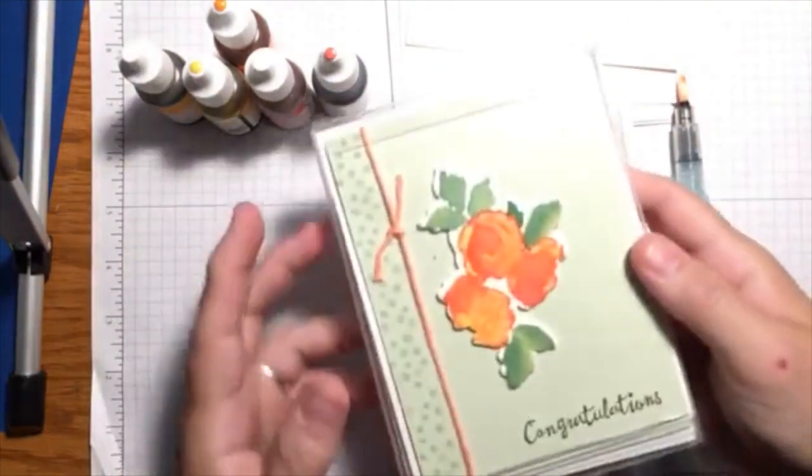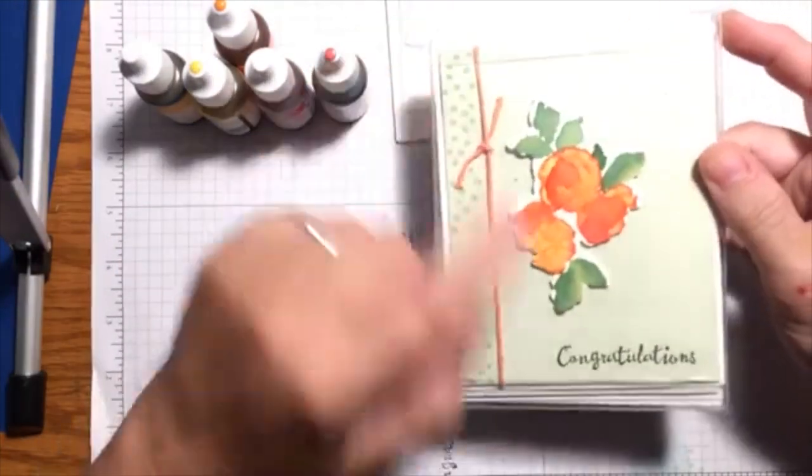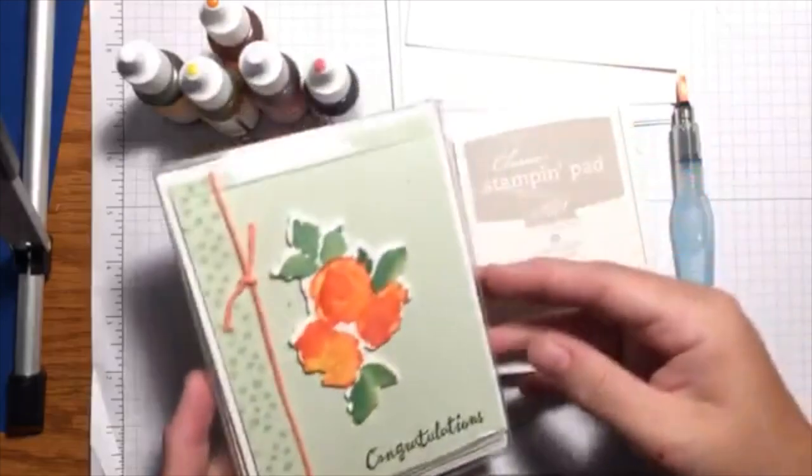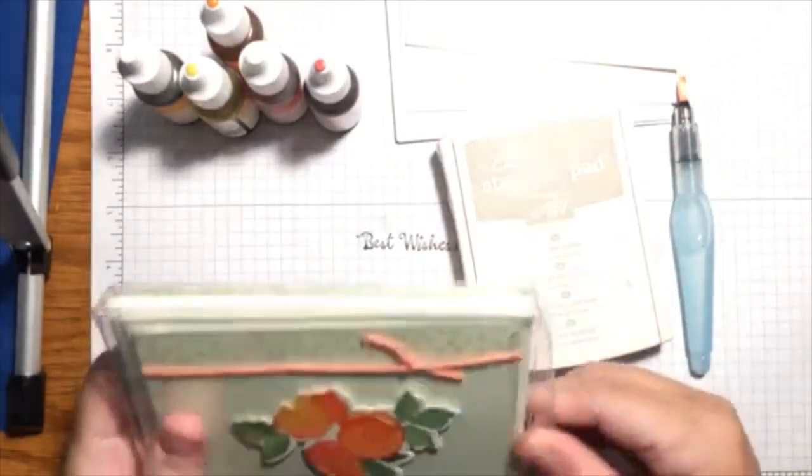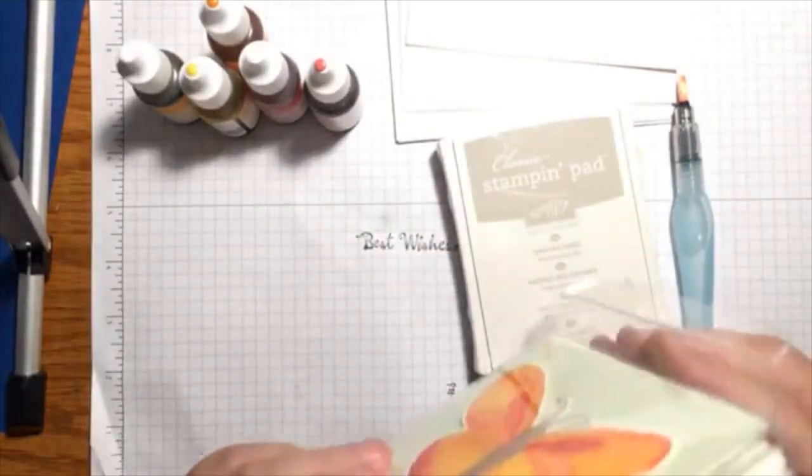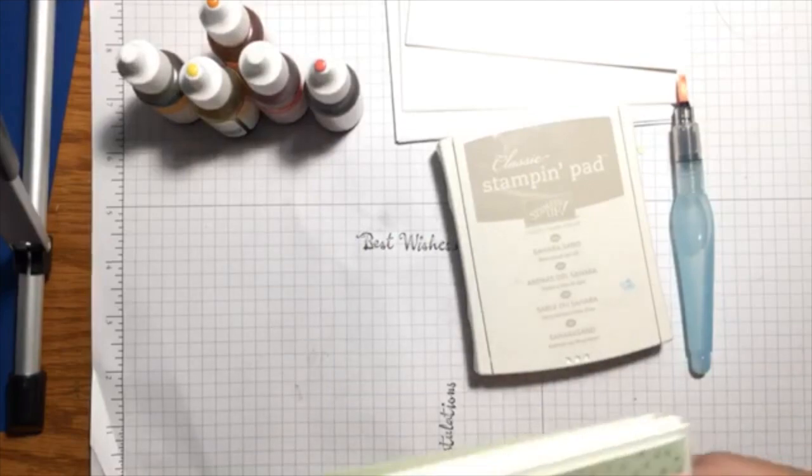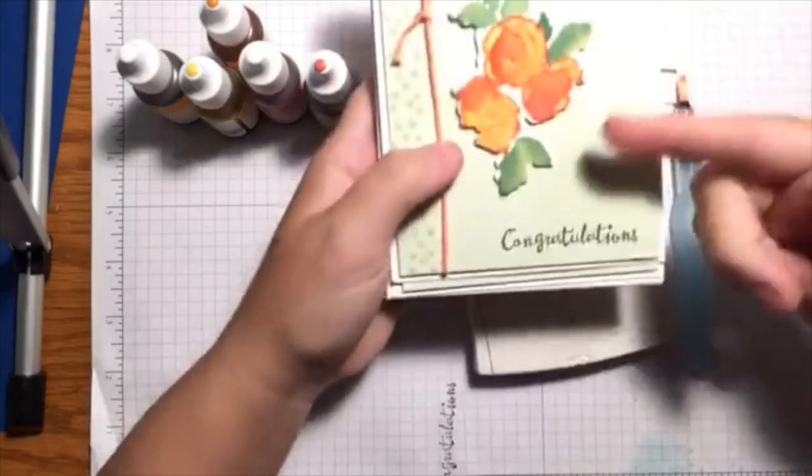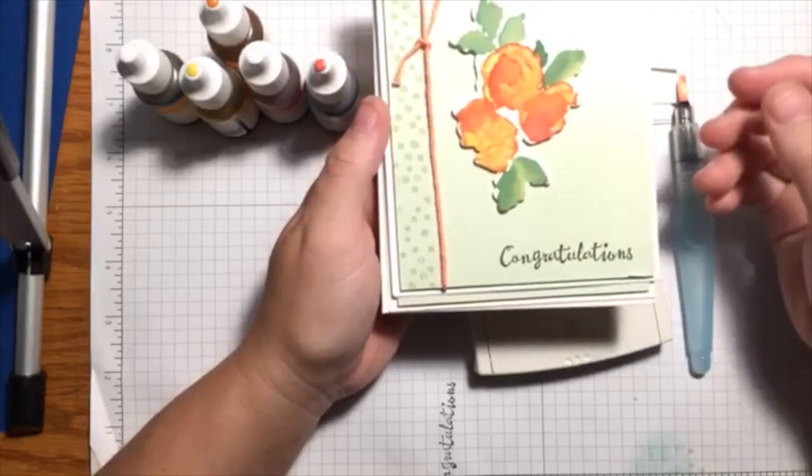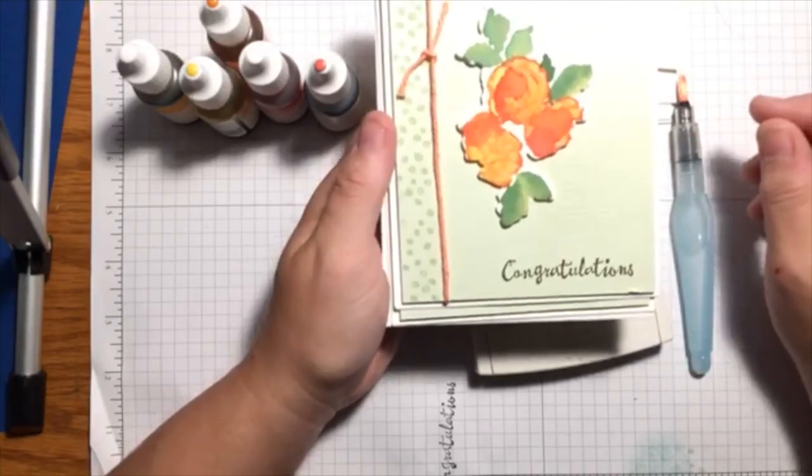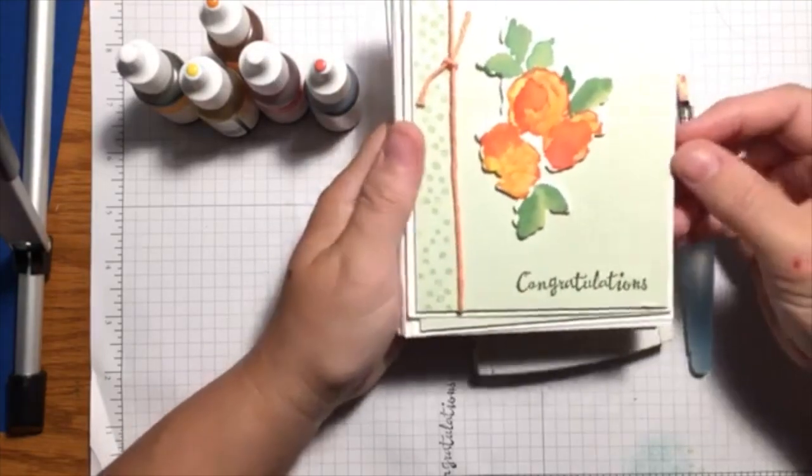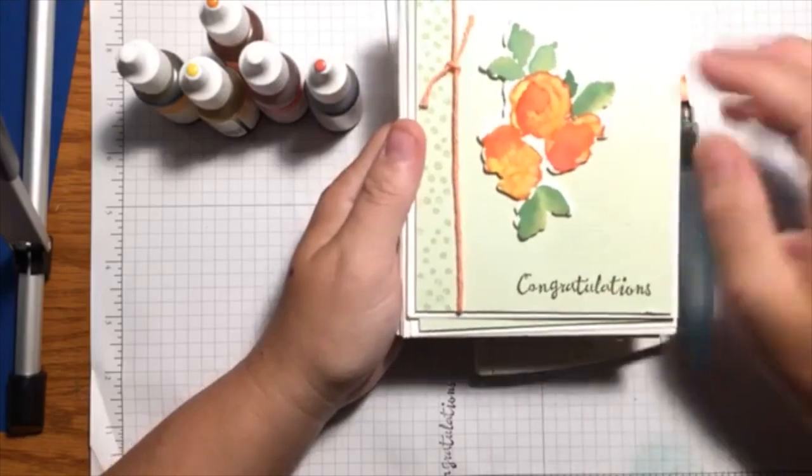We're going to look at no-line watercoloring today and this is an example. I made a little set of cards because I started playing and I had so many examples I just went crazy. So this is the rose from the Petal Palette stamp set.